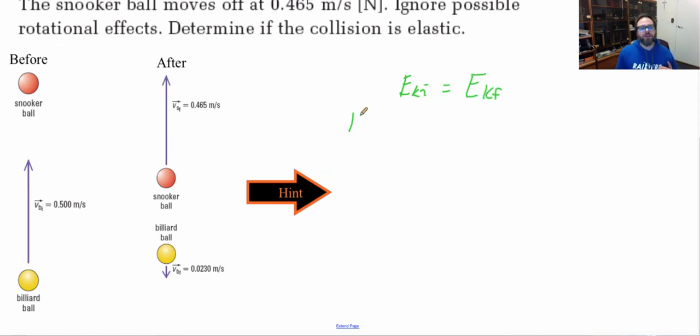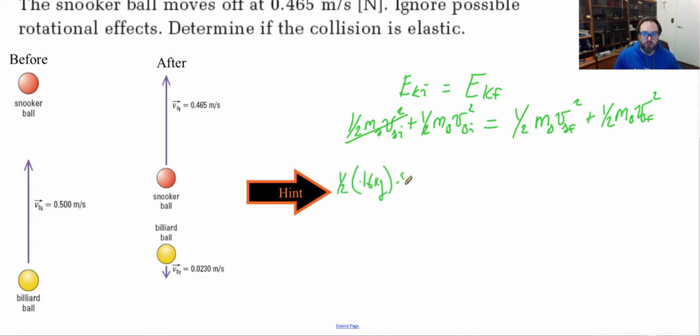So I know my initial kinetic energy must be equal to my final kinetic energy. So now we have to look at my kinetic energies of both balls beforehand, the snooker ball and the billiard ball. And then we have to look at the kinetic energies of both balls after, both for the snooker ball and the billiard ball. Now from this, I know that my initial snooker ball is not moving. So I could just cross that off. So now let's plug in and see if my kinetic energies in both situations before and after are equal.